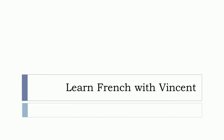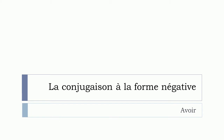Bonjour à tous and welcome to Learn French with Vincent. In this video we'll see together la conjugaison à la forme négative. I've been noticing that my students normally can have some difficulties conjugating the verbs, especially if you ask them to put the negative forms. So that's what we'll see in this video, and the verb that we will see will be avoir, which means to have.